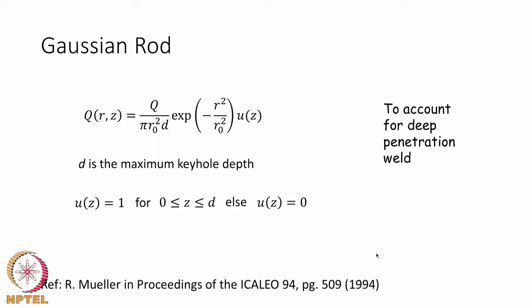A Gaussian rod can also be used — basically a Gaussian function multiplied by a z function. Such a function is very simple: the heat source is centered at 0, then multiplied by a function u(z) that goes from 1 to 0, making it essentially a perfect cylinder. This can also be used to model a volumetric heat source.